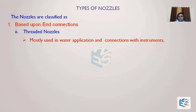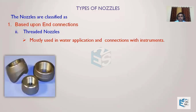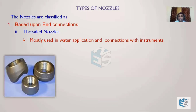Based on end connection, the next type is threaded nozzles. Threaded nozzles are mostly used in water applications or low-pressure applications. These are self-reinforced sockets having threads, called thread outlets, which are used as nozzles. They get attached to your vessel — you can see the radius of the profile on the shell on which it fits.